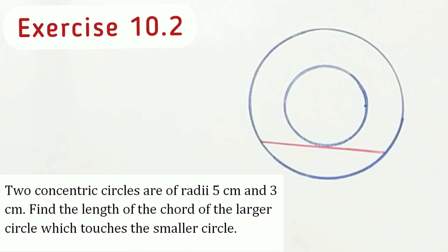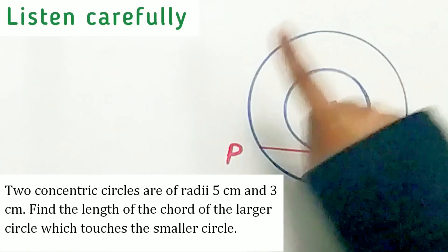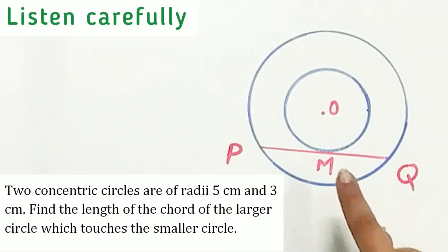Hence we have to find the length of PQ. Now let O be the common center of two concentric circles. PQ be the chord of the larger circle touching the smaller circle at M.